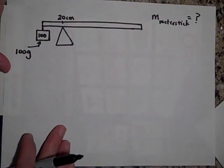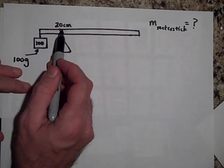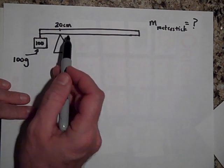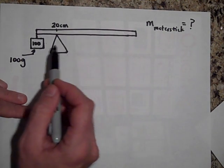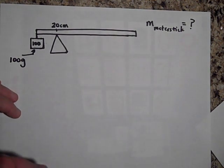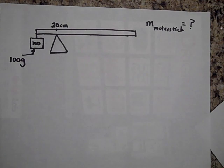Now we have a meter stick that's balanced on a fulcrum but not at its center — instead it's balanced at the 20 centimeter mark, so from the end to the fulcrum is 20 centimeters. The mass of this meter stick is being balanced out by a 100 gram mass. Can you tell me what the mass of the meter stick is? Go ahead and pause.